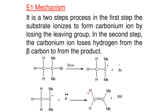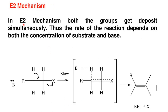E2 reaction is a single-step reaction. The C-H bond cleavage and the double bond formation occur simultaneously. The leaving group X is removed at the same time. The transition state is formed all at once — this is the E2 elimination mechanism. The transition state has a specific geometry.